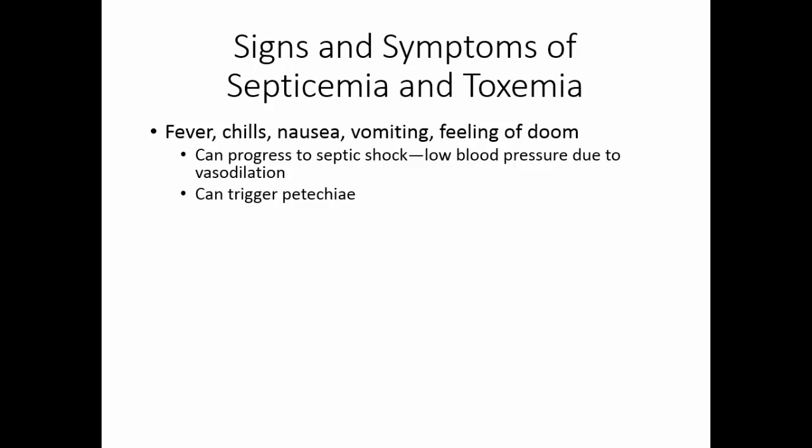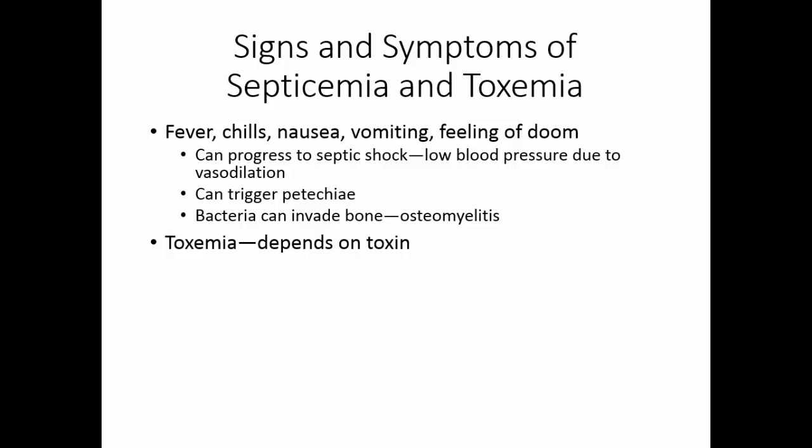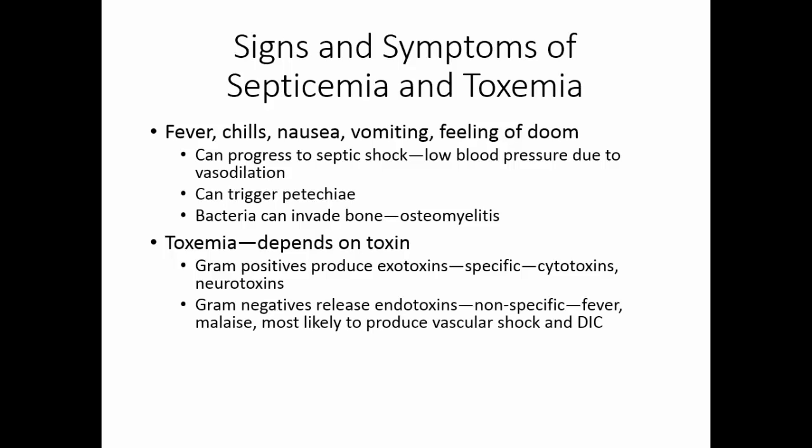Septicemia can also trigger petechiae — those small blood vessel ruptures under the skin. The bacteria in the blood can invade the bone, causing osteomyelitis. The signs and symptoms of toxemia will depend upon the toxin in the blood. Gram-positive organisms produce exotoxins, which are usually cell-specific — cytotoxins that kill cells or neurotoxins that do nerve damage. Gram-negative cells tend to release endotoxins, which are nonspecific. They cause fever, malaise, and are most likely to produce vascular shock and disseminated intravascular coagulation.